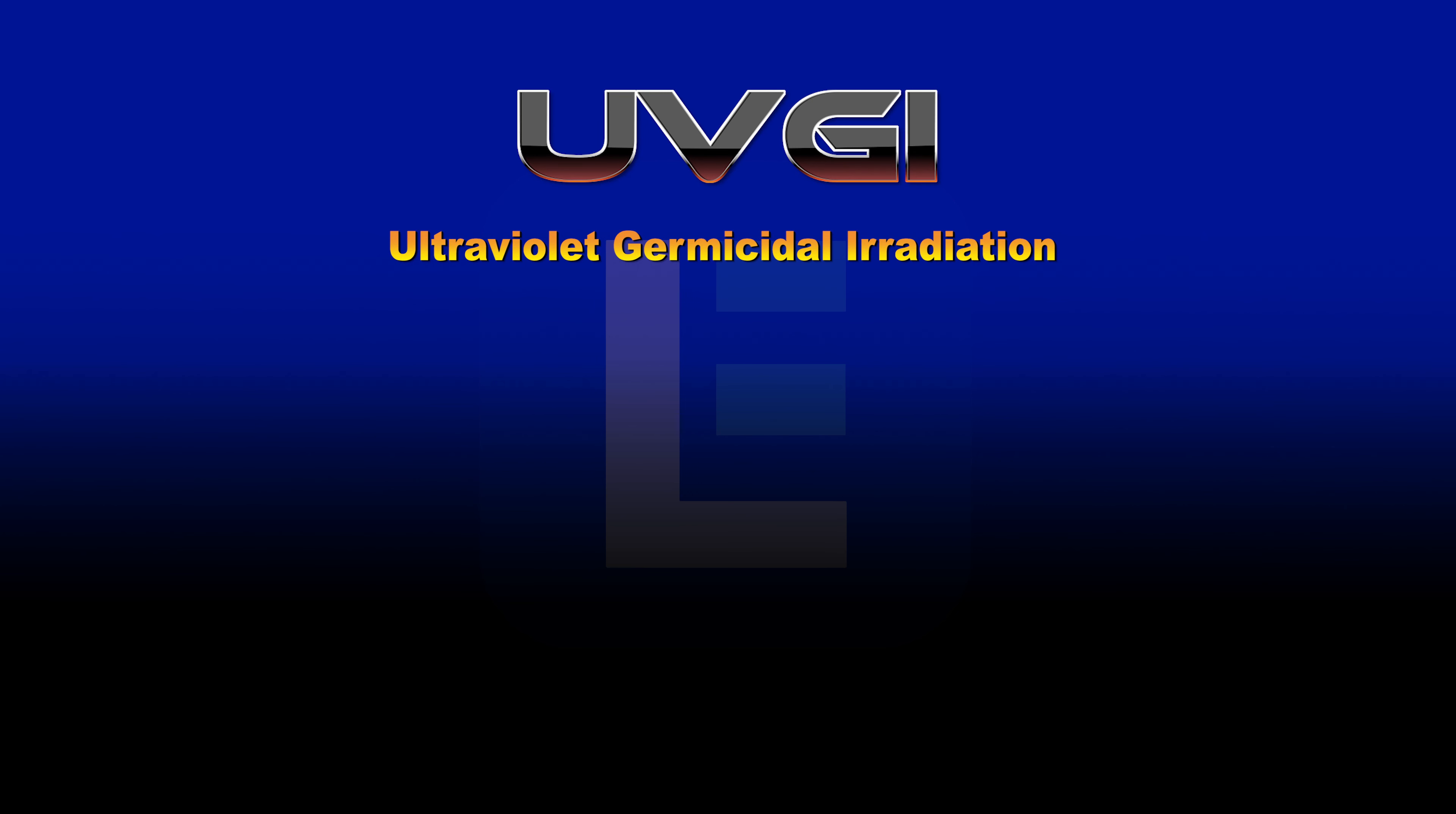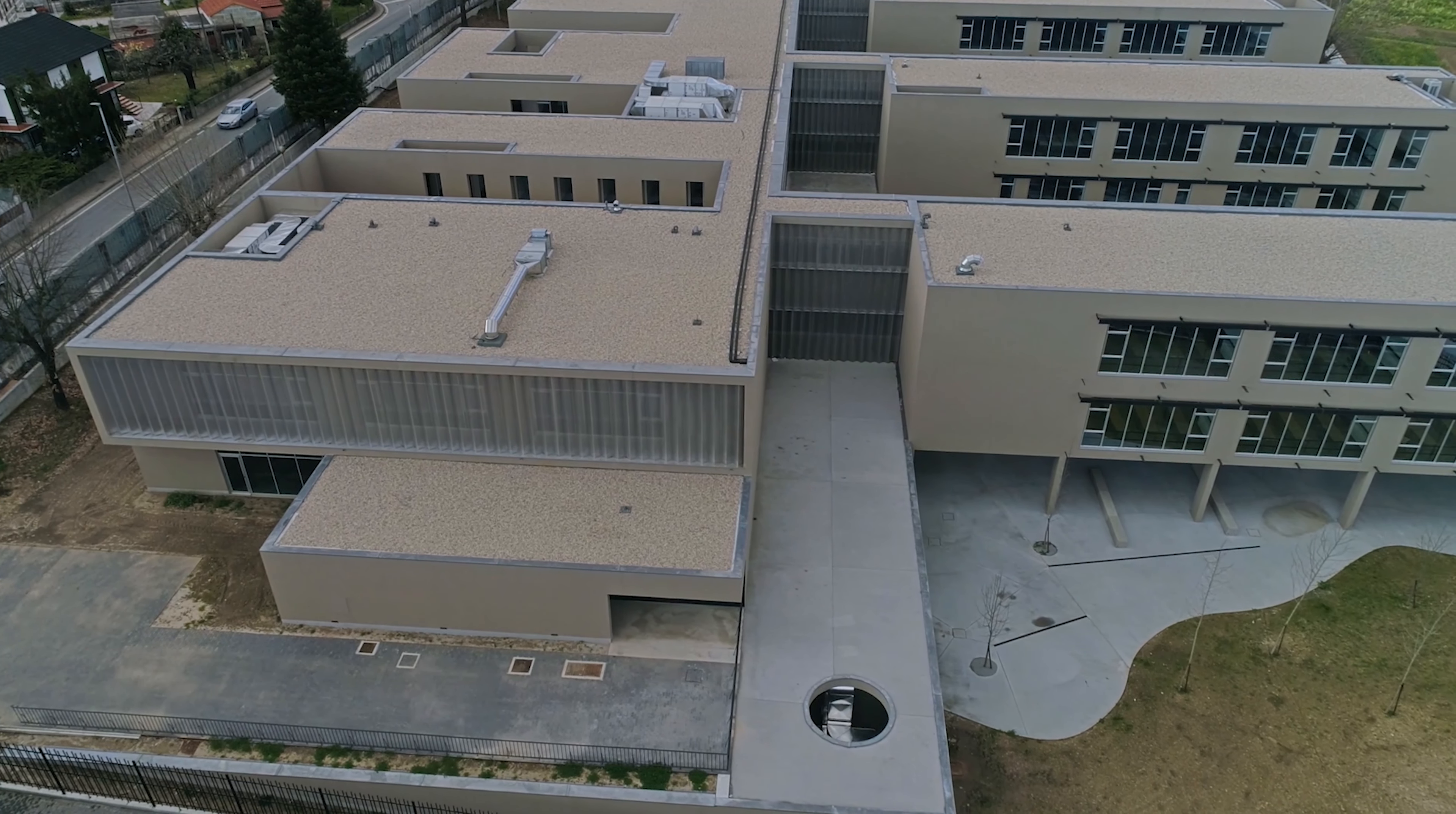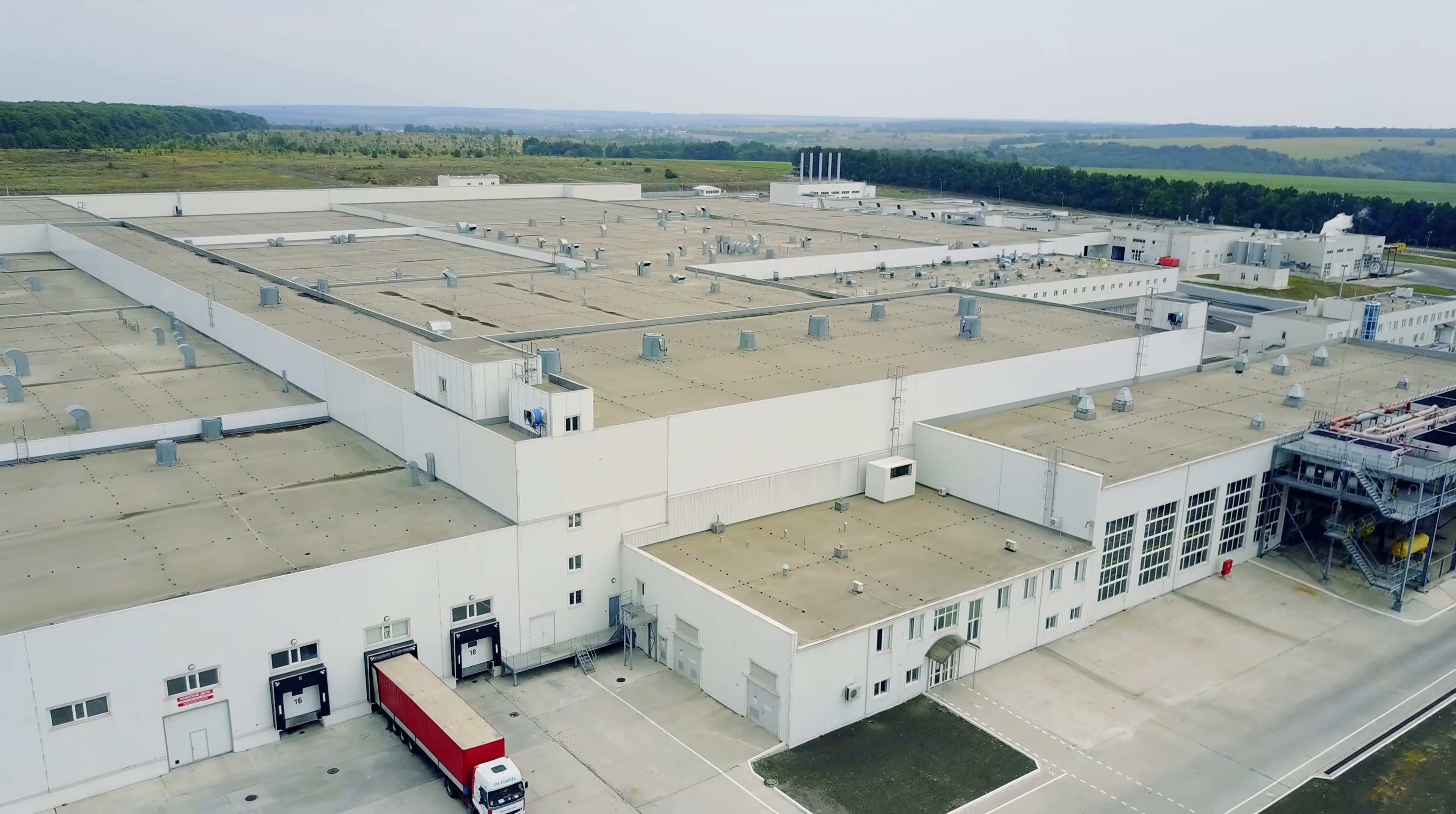UVGI is used inside HVAC systems in all types of settings including family homes, commercial spaces such as schools and office buildings, and industrial facilities.